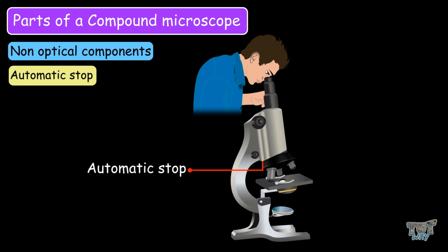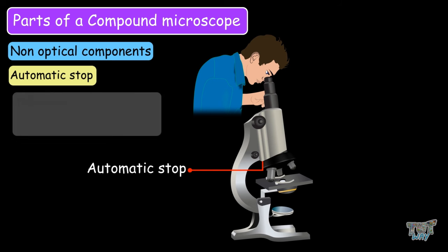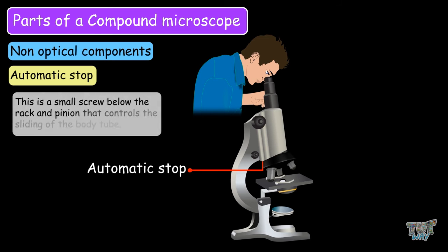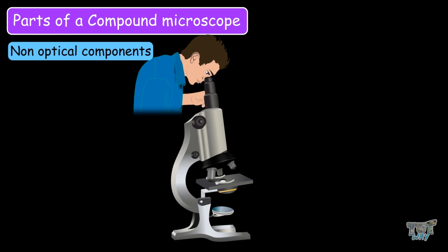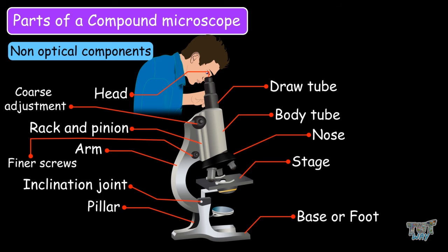The automatic stop is a small screw below the rack and pinion that controls the sliding of the body tube. These are the non-optical parts of the compound microscope.